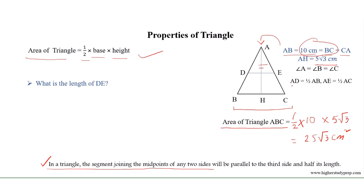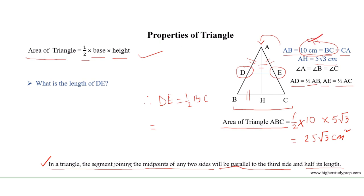We know that in a triangle, the segment joining the midpoints of any two sides is parallel to the third side and half its length. Here, AD equals half of AB, so D is the midpoint of AB, and AE equals half of AC, so E is the midpoint of AC. Therefore DE, the segment joining the midpoints of sides AB and AC, is parallel to BC. Thus DE equals half of BC, where BC equals 10 centimeters, so DE equals 5 centimeters.